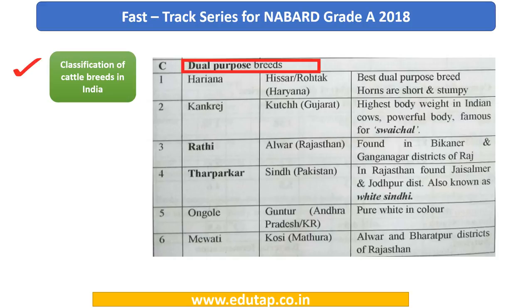Then come the dual purpose breeds. There are six names: Haryana, Kankraj, Rathi, Tharpakar, Ongol and Mivati. Kindly make sure that you remember these names — it's very important and very easy. Just see if there are any relevant feature points that you need to stick to for each breed.